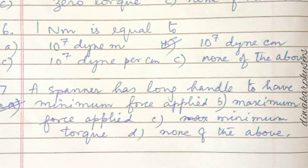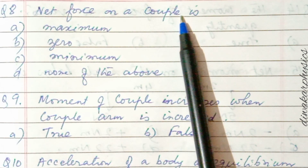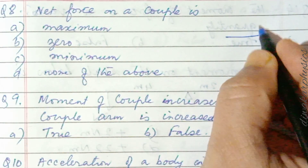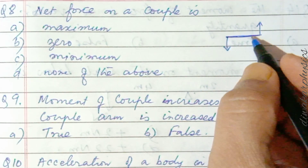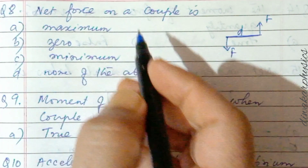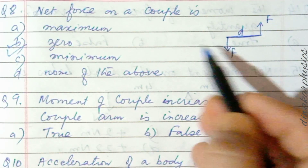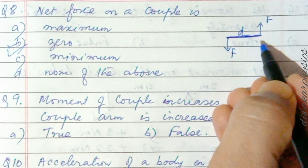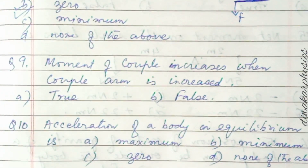Question eight: net force on a couple is — ? A couple has two equal and opposite forces acting on different lines of action. Since the forces are equal and opposite, the net force is zero. However, because they act on different lines of action, they produce a rotational effect.